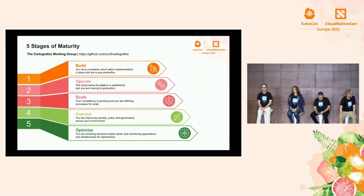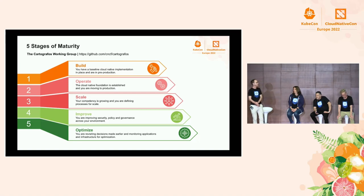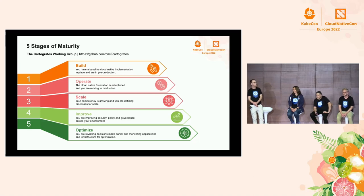There are five stages to the maturity model. We have level one, which is Build. Level two, Operate. Level three, Scale. Level four, Improve. And level five, Optimize.